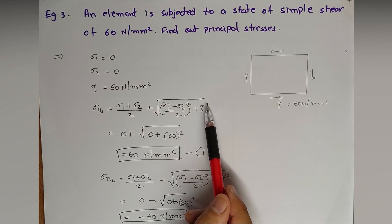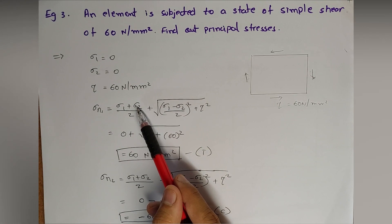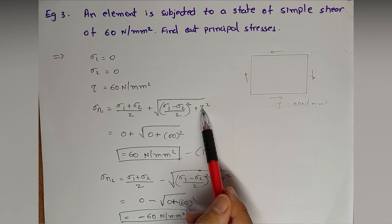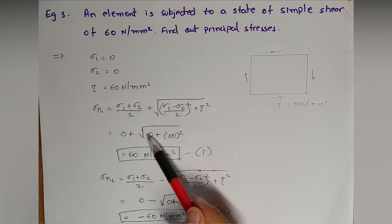Here Sigma one is zero, Sigma two is zero. Again here it is zero, so the answer only would be depending on shear stress, that is 60. Plotting this value, 60 whole square, answer will be 60 Newton per mm square. The square and under root will be removed because it is positive, it is tensile.